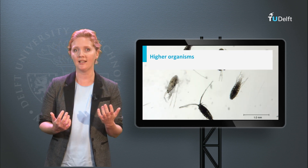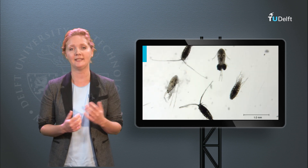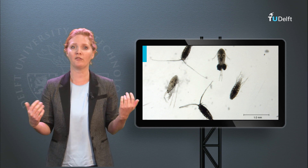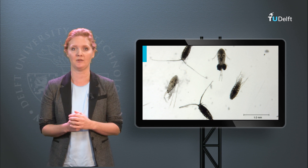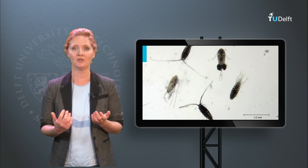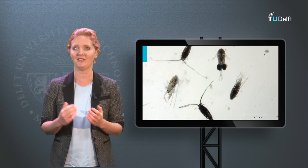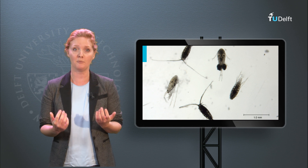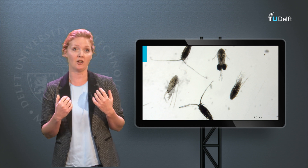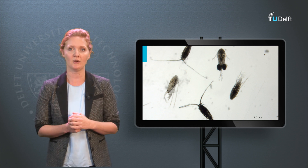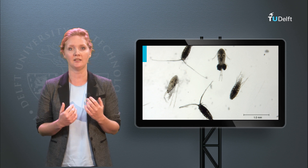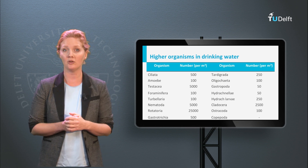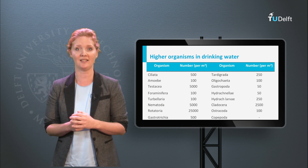Higher organisms have a size between 0.05 and 10 mm. To give you an idea, a cubic metre of water may contain over 50,000 of these organisms, which gives the impression of a large zoo and seems unsuitable for drinking. However, fortunately, a characteristic of most higher organisms is that they are harmless to human health. Their presence in drinking water is only aggravating if they are detectable by the naked eye. An overview of higher organisms typically found in drinking water is depicted in a slide.